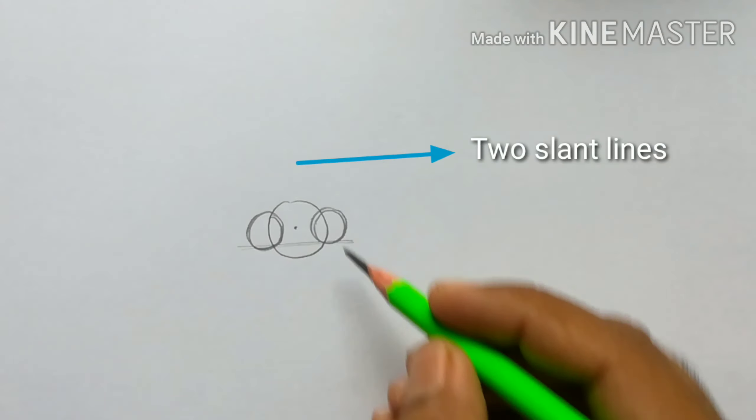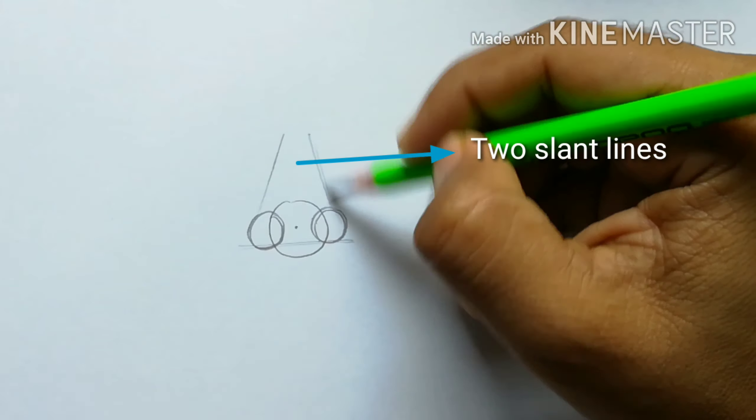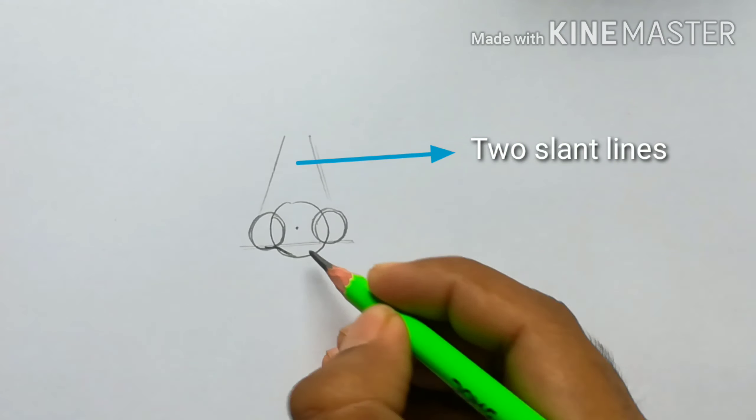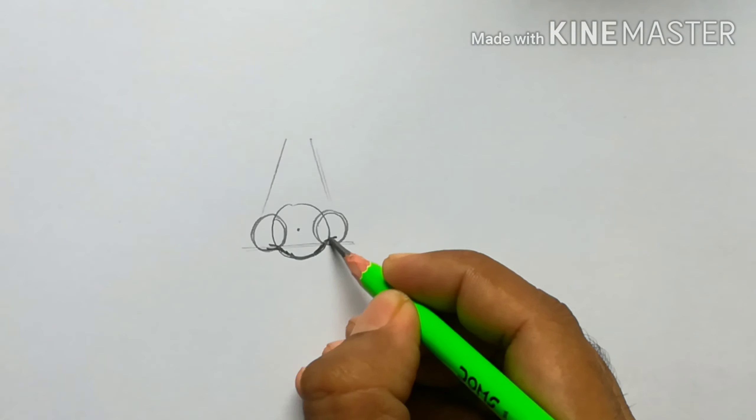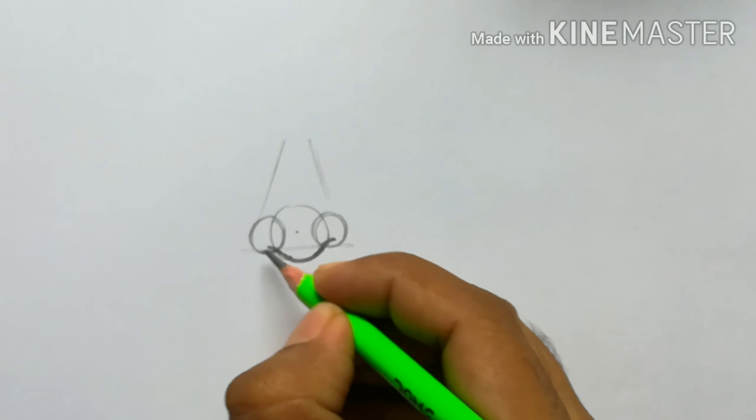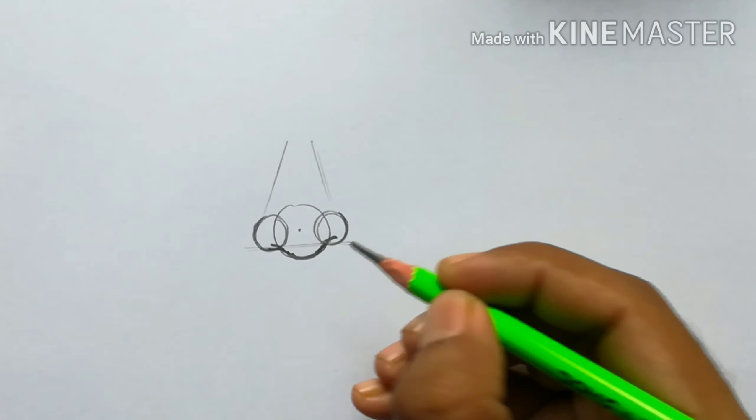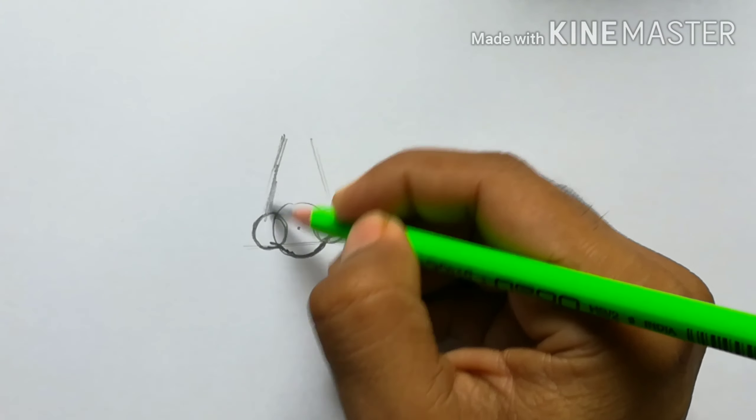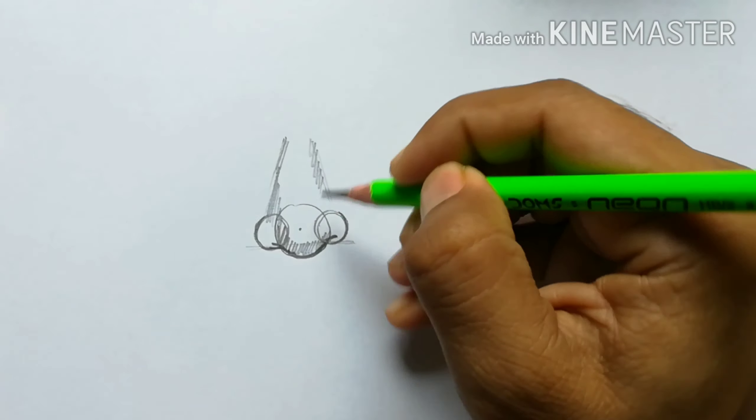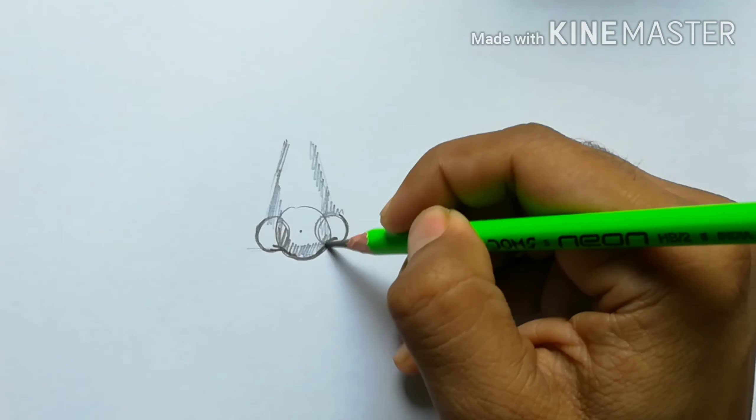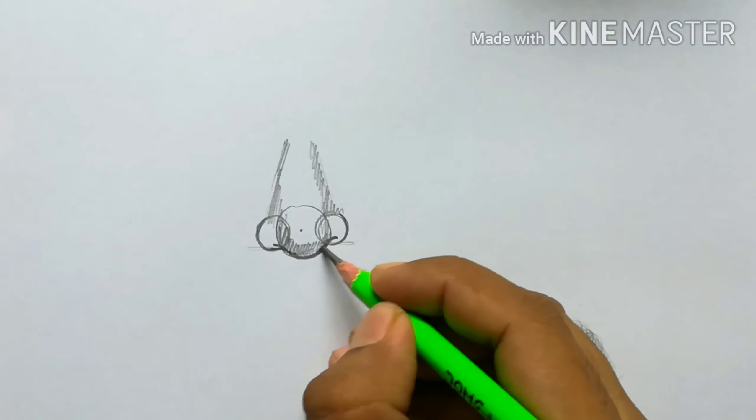So these three things are going to be our basic outline for all the noses - all different types of noses viewed from different angles. These three things: a bigger circle, two smaller circles, and two slant lines on both sides.